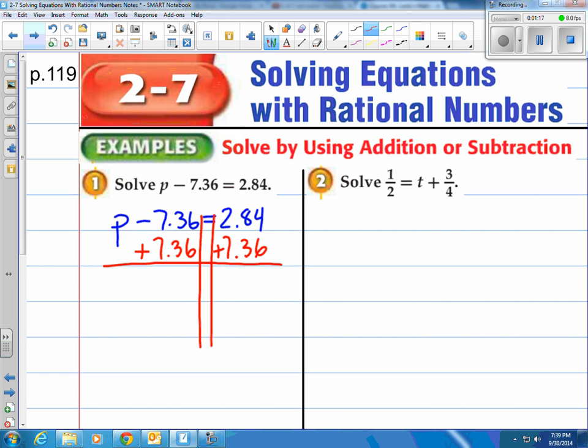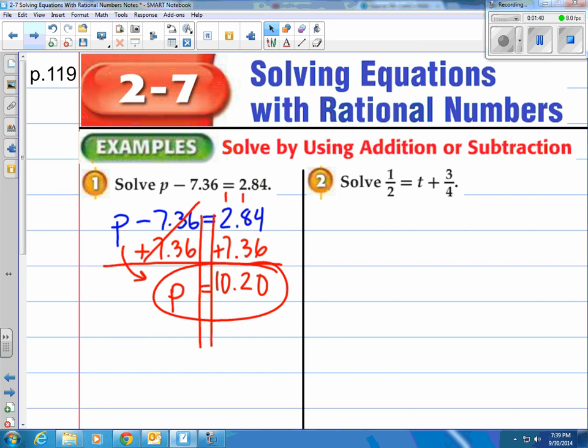When you do that, of course that will go down to zero leaving the p left over and that's going to be equal to whatever 2.84 plus 7.36 is. So we have zero here plus the one there. We've got two plus the one there. We've got ourselves ten. So we've got 10.20. That is our answer. You can go ahead and check that if you want on your calculator. 10.2 minus 7.36 does equal 2.84.